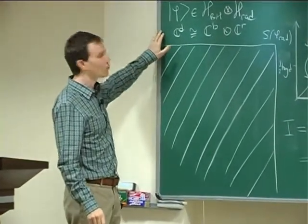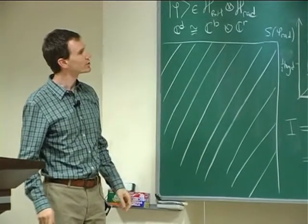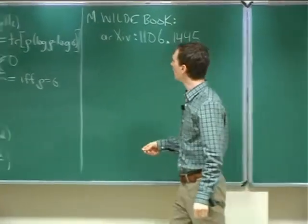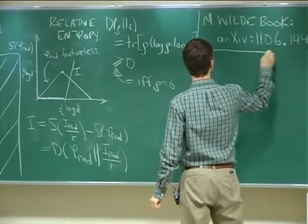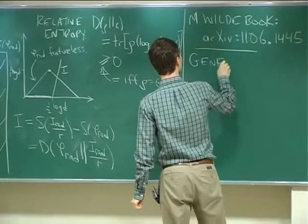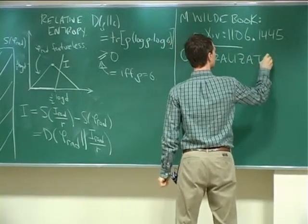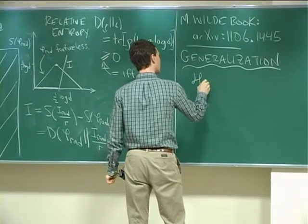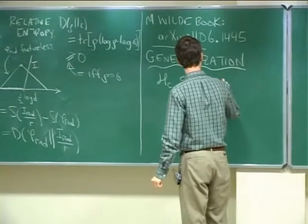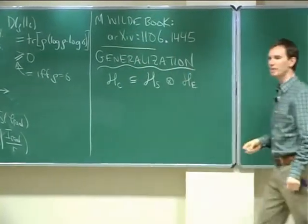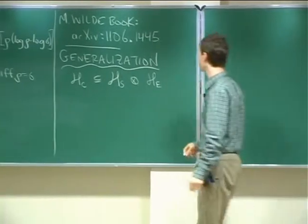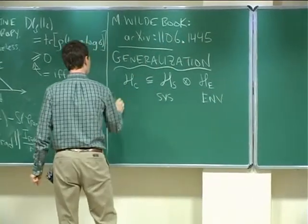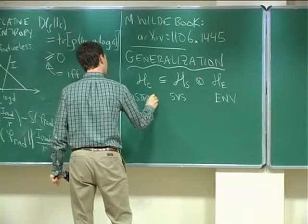This was a very toy model. Partly because of questions yesterday, I'd like to show how this idea extends to a setup that might be more physically realistic. We'll have some subspace C in a tensor product Hilbert space, using different labels to get away from the radiation/black hole language. Let's say we have a system, an environment, and a constraint.